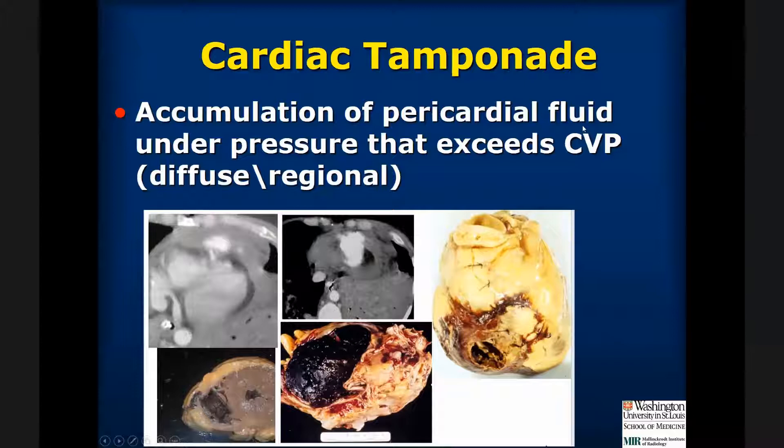Cardiac tamponade is the accumulation of pericardial fluid under pressure that exceeds the central venous pressure. It can be diffuse or it can be regional.